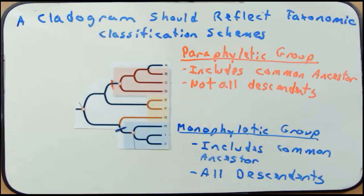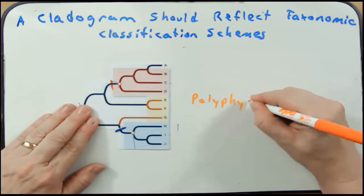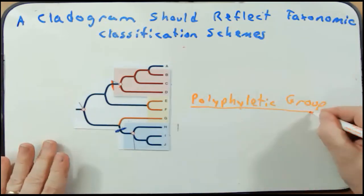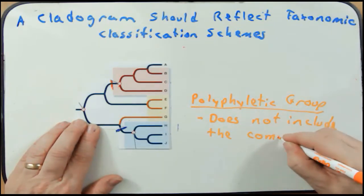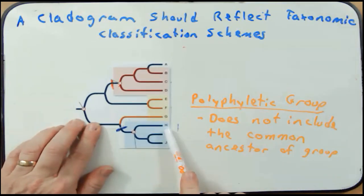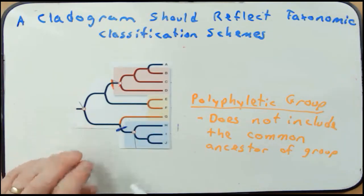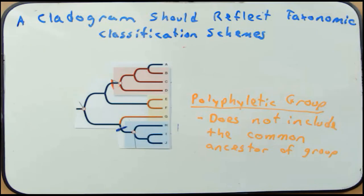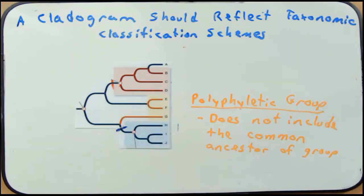This yellow box represents a polyphyletic group. A polyphyletic group does not include the common ancestor of the group — it includes taxa E, F, and G, but does not include their common ancestor. Be familiar with these three group types and be able to look at a cladogram and determine whether certain groups are paraphyletic, polyphyletic, or monophyletic.